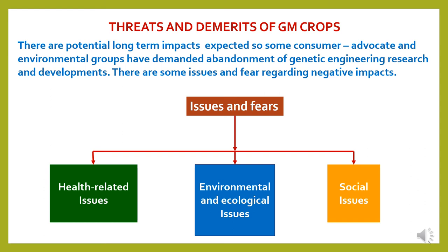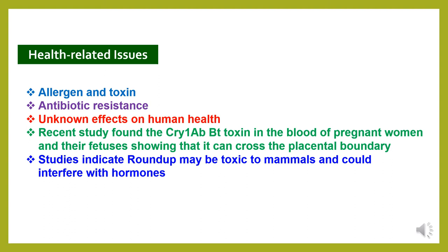Now, turning to the threats and demerits of GM crops. There are potential long-term impacts, and some consumer advocates and environmental groups have demanded abandonment of genetic engineering research and development. There are issues and fears regarding negative impacts, including: first, health-related issues — allergens and toxins, antibiotic resistance, unknown effects on human health; a recent study found Cry1-AB Bt toxin in the blood of pregnant women and their fetuses, showing it can cross the placental boundary, and studies indicate Roundup may be toxic to mammals and could interfere with hormones.